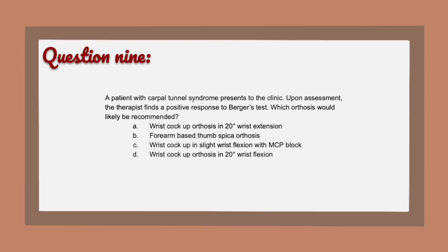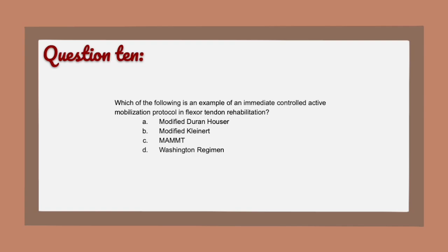Question 9: A patient with carpal tunnel syndrome presents to the clinic. Upon assessment, the therapist finds a positive response to Burger's test. Which orthosis would likely be recommended? A) Wrist cock-up orthosis in 20 degrees wrist extension. B) Forearm-based thumb spica orthosis. C) Wrist cock-up in slight wrist flexion with MCP block. D) Wrist cock-up orthosis in 20 degrees wrist flexion.